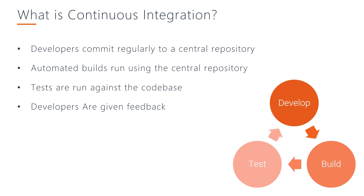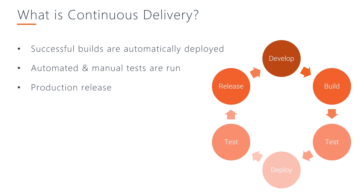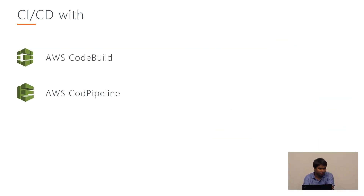In continuous integration, developers commit regularly to a central repository, automated builds run, tests run against the codebase, and developers are given feedback. They can make code changes if tests are failing and get the build running again. In continuous delivery, successful builds are automatically deployed, automated and manual tests are run, and if everything checks out, we can do a production release. Now let's talk about AWS CodeBuild and AWS CodePipeline and how we are going to achieve CI/CD with these services.